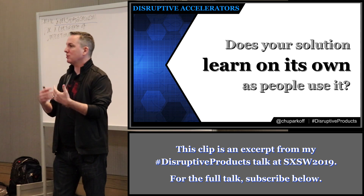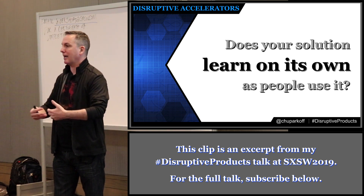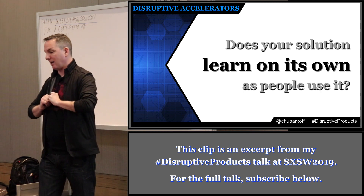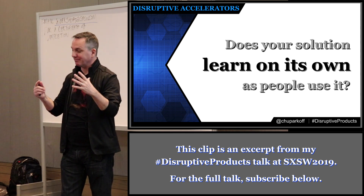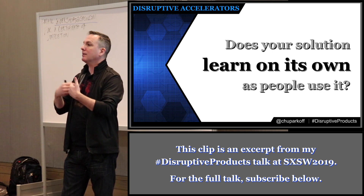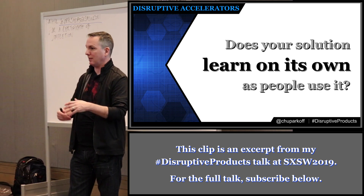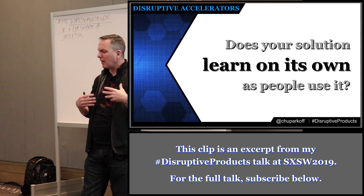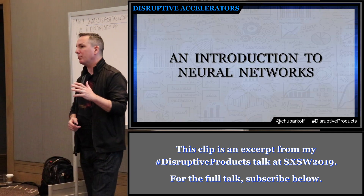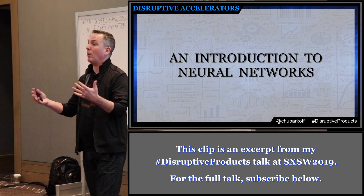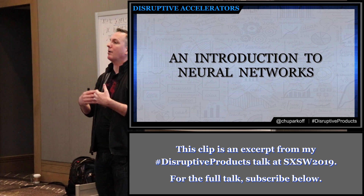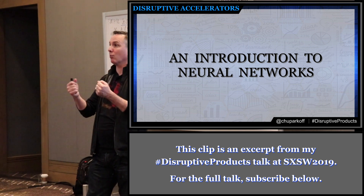One of the things that's increasingly important as we build solutions is that we're building something that can learn and improve over time. We're no longer in a world where you make software, put it on a disk, mail it out, and it's static forever. The things we build have to learn from the users that engage with it — collect new information about people's choices and learn over time from the patterns it encounters. Neural networks are one of the ways we can build systems that learn automatically, and I want people to have a real understanding of how they work.